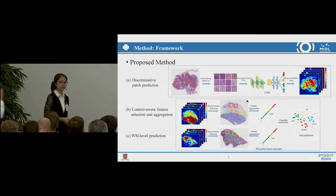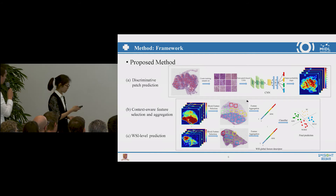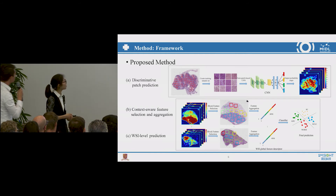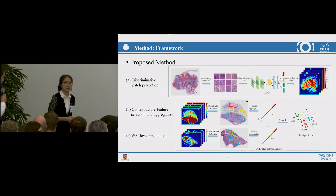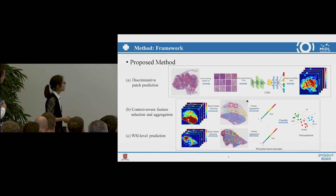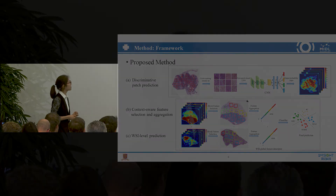Q: You could also take these block descriptors and put a CNN on top of those instead of a random forest, and then train that end-to-end. Is that something you are considering? A: Yes, we would like to replace the random forest classifier with a multilayer perceptron to make the process end-to-end training. In the following work, we would like to try this.